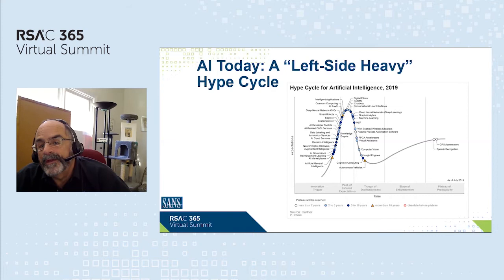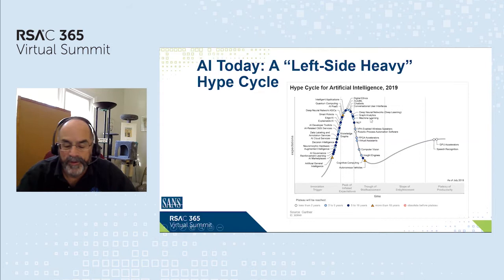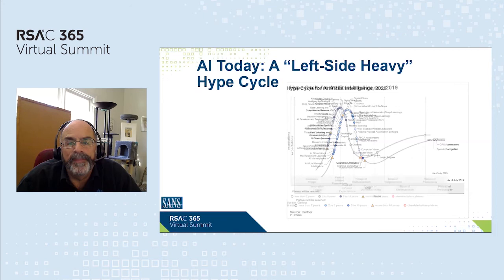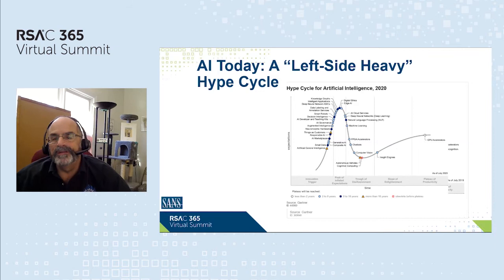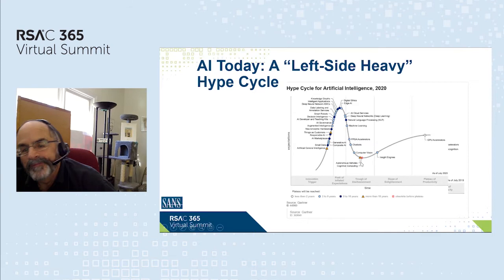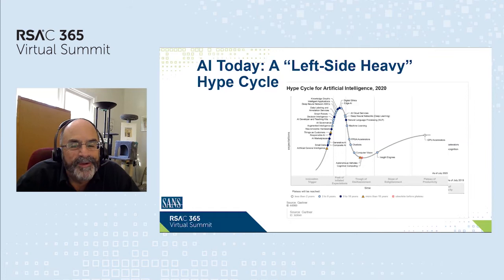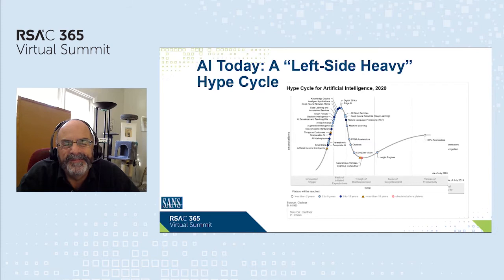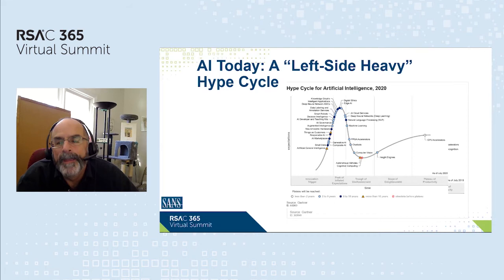Looking at the 2019 Gartner hype cycle, machine learning sits in the middle of the curve. Using animation to show the 2020 version, machine learning really hasn't made a lot of progress. Looking toward the trough, coded as obsolete before plateau, you see cognitive computing — a high-level term for computers thinking, acting, and communicating like humans. The feeling is they're really never going to reach that point, no matter how many MIPS or megabytes or quantum computing we throw at them.